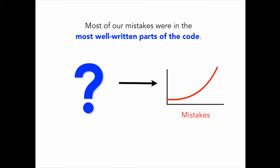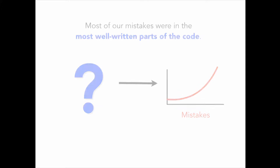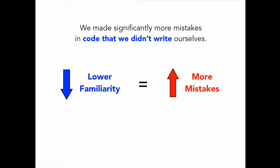Most of our mistakes were actually in the most well-written parts of the code — not in the crufty code full of technical debt, but the code written by our most senior engineers. At first I didn't know what to do with that, so I started digging around in the data. What I did find was that we made significantly more mistakes in the code that we didn't write ourselves. That made some sense — a lack of familiarity increasing the likelihood of mistakes — but I couldn't help but think there had to be more to the story than that.